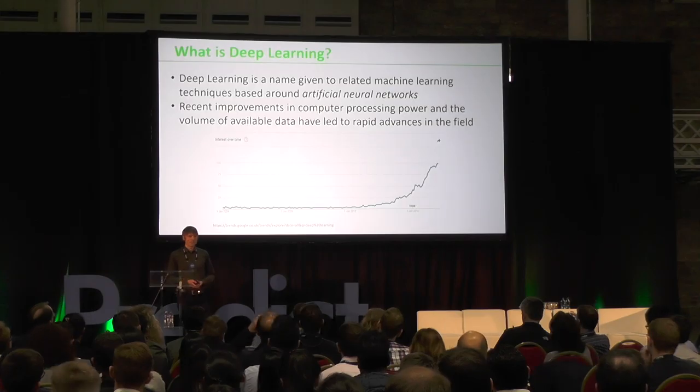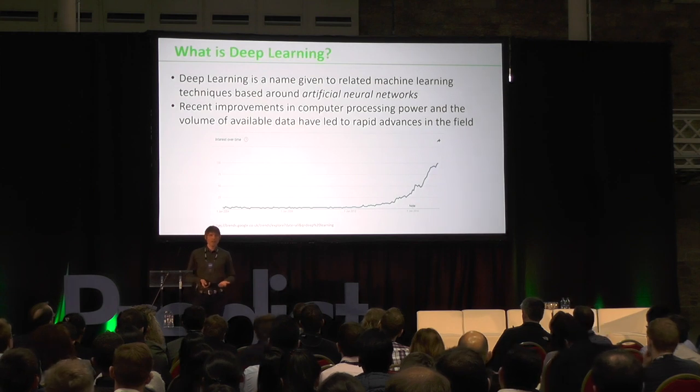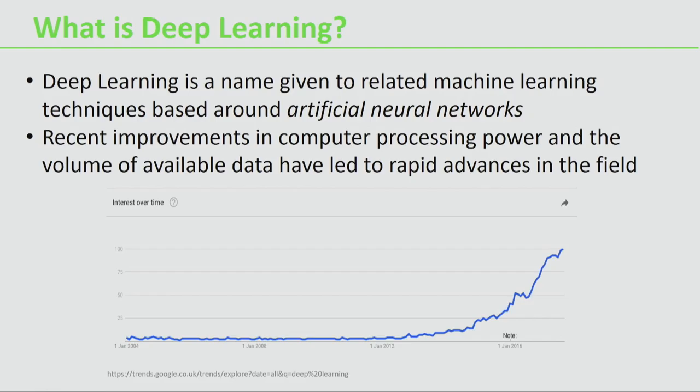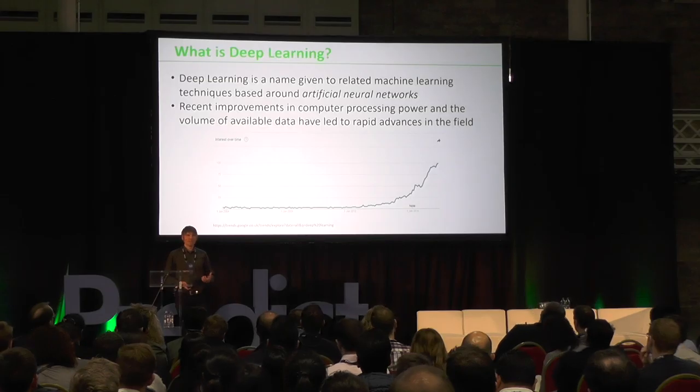Why is this popular these days? Recent improvements in computer processing power and the volume of available data over recent years have really led to rapid advances in this field. We can see this in a Google Trends graph showing the volume of searches for 'deep learning' — quite flat up until around 2012, and then they've really skyrocketed as there's more interest, more practitioners, more people working in this, and more tools available.